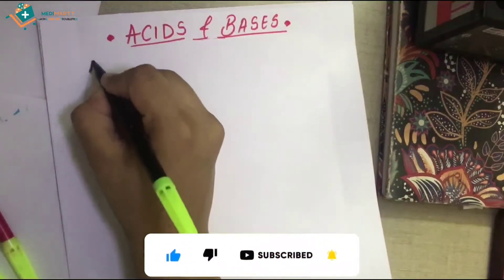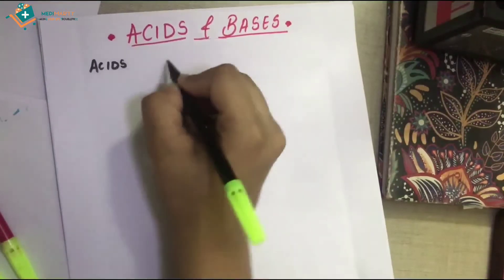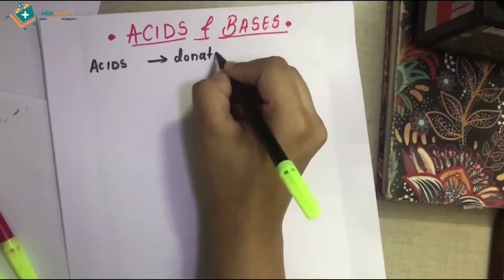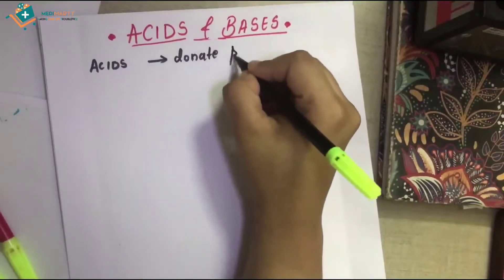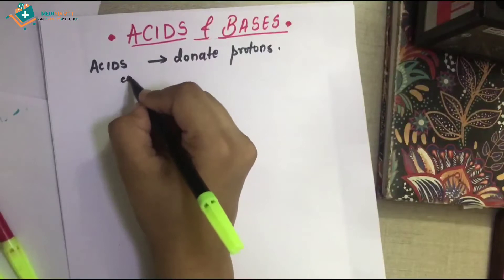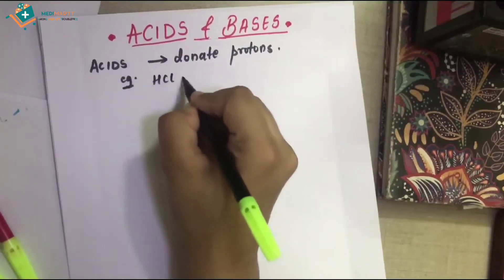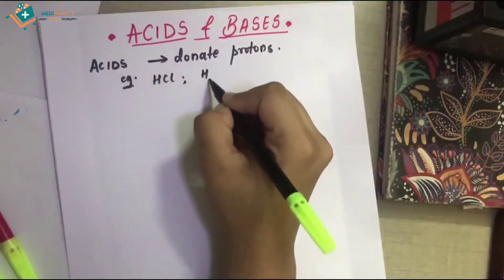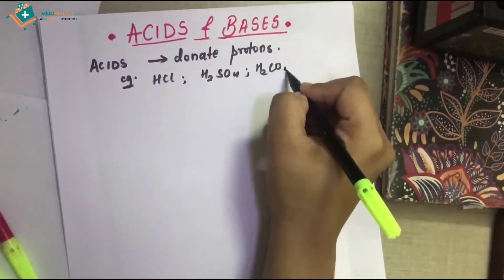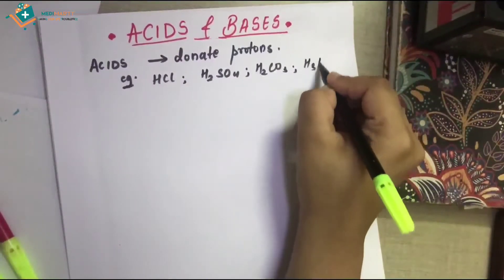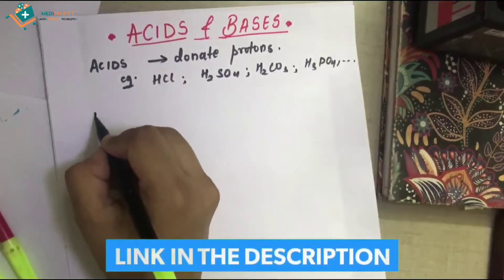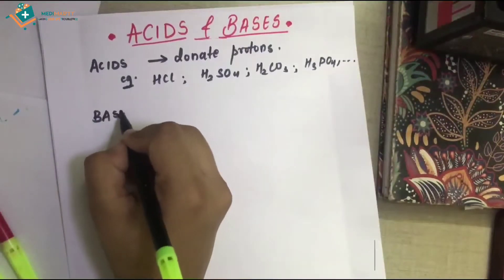So basically, what are acids? Acids are those that donate protons. These are like rich personalities who always donate protons and believe in donations. Examples include hydrochloric acid, sulfuric acid, phosphoric acid, and carbonic acid.